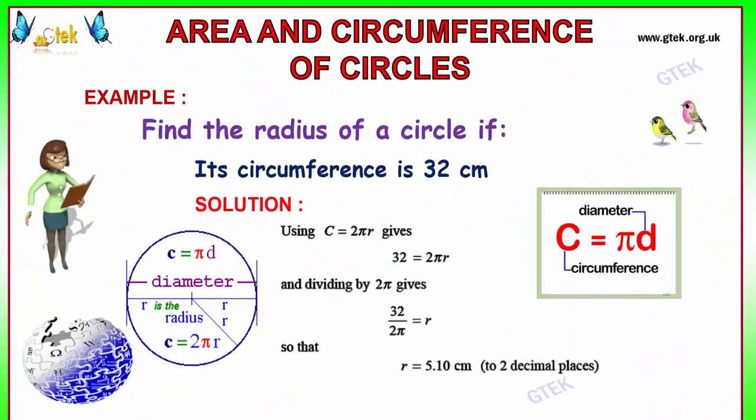Now we got the circumference and we need to find the radius. The circumference is 32 cm. The formula is C is equal to 2 pi r. 32 is equal to 2 pi r, so r equal to 32 divided by 2 pi. The value of pi is 3.14, so calculating this one, we'll get the radius is 5.10 cm.